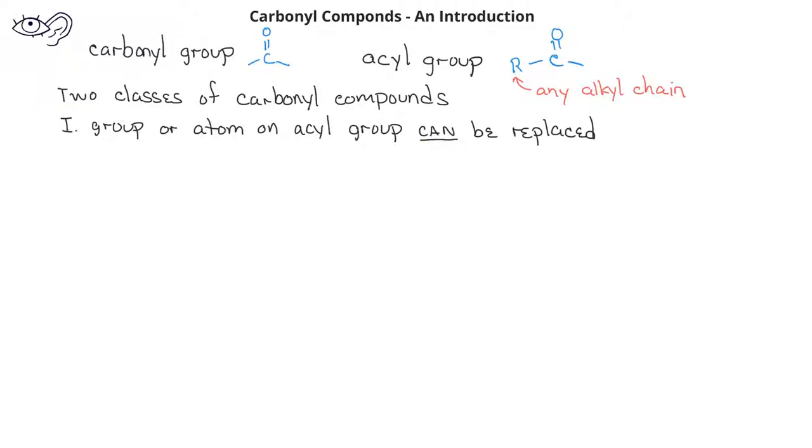Within this class of carbonyl compounds, we have carboxylic acids, which have a hydroxyl group bonded to the carbonyl carbon. We also have acyl chlorides, in which a chloride atom is bonded to the carbonyl carbon.